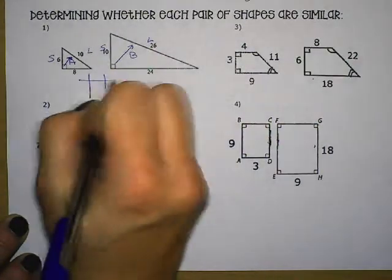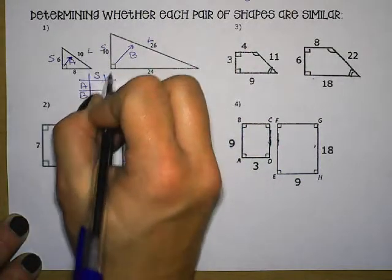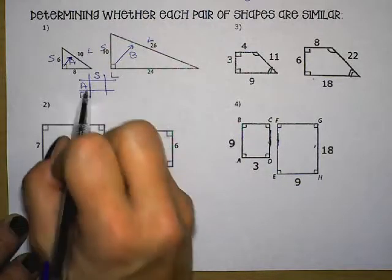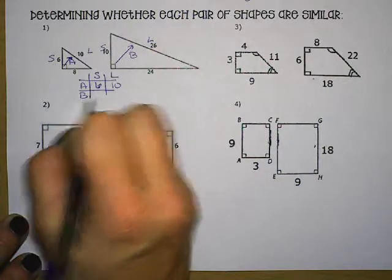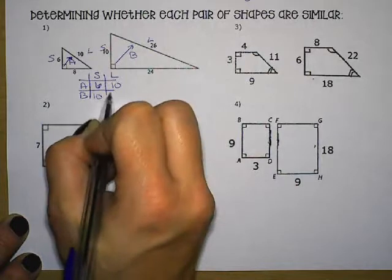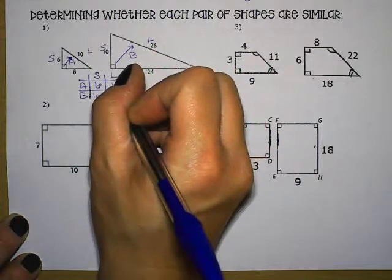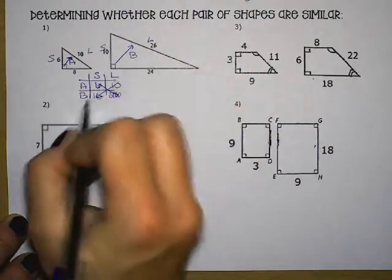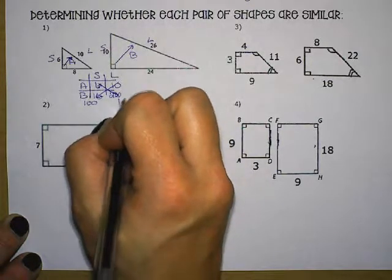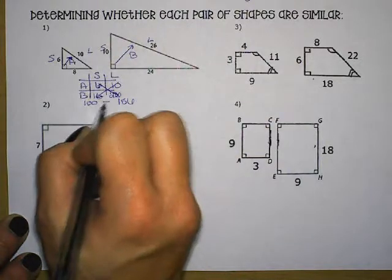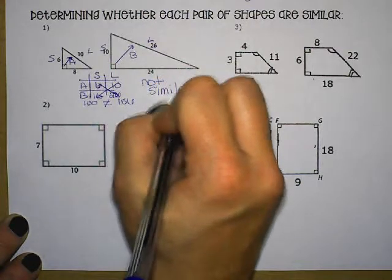We can determine if these are similar figures by setting up a proportion comparing A to B short to long. A short is 6, A long is 10, B short is 10, and B long is 26. You can cross multiply. We get 100 and then 6 times 26 is 156. Since these two are not equal, we can state that these two shapes are not similar.